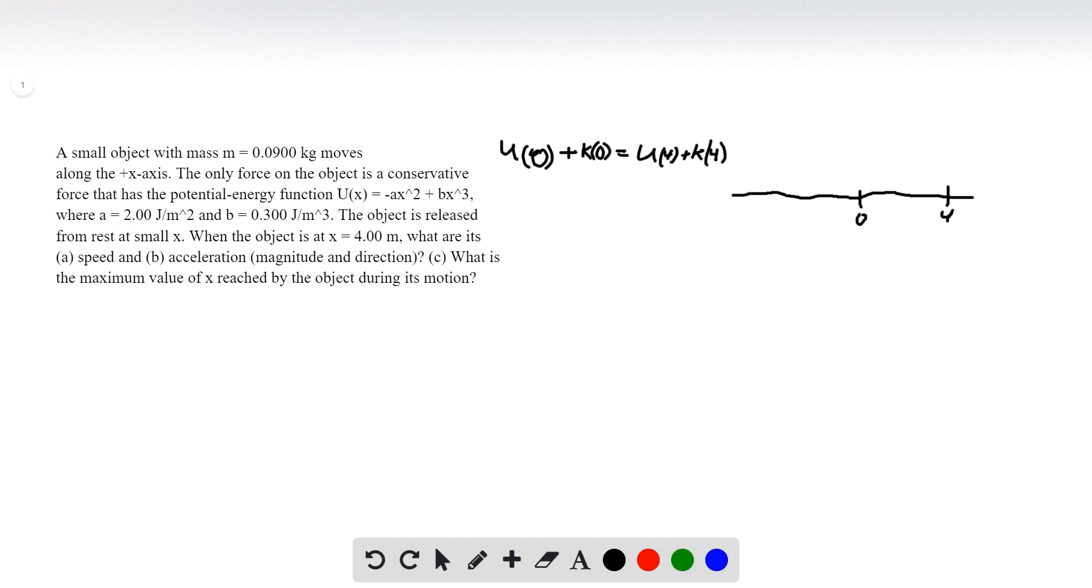We can immediately find out what some of these things are. We have the potential energy function. We can just plug in 0. So U at 0 equals something times x squared plus something times x cubed. So that's 0 plus 0, so that's equal to 0. We're told that the object is released from rest, so we can assume that the kinetic energy is equal to 0 at x equals 0. So that becomes 0 plus 0 equals U4 plus K4.